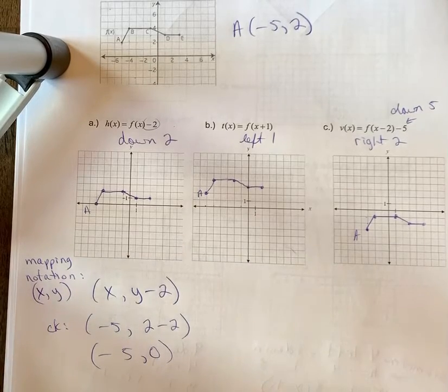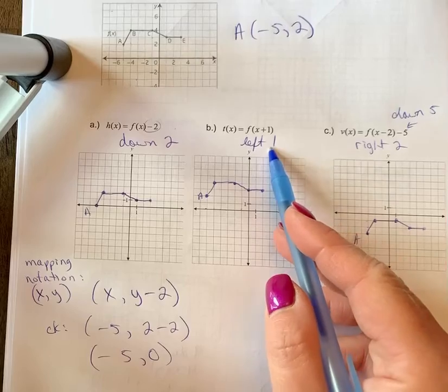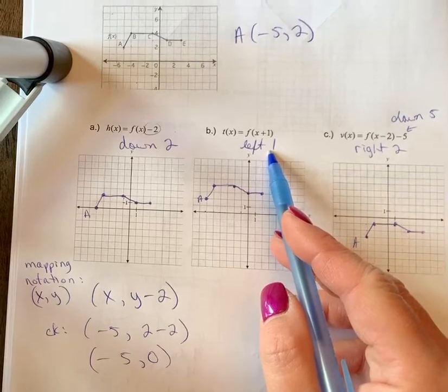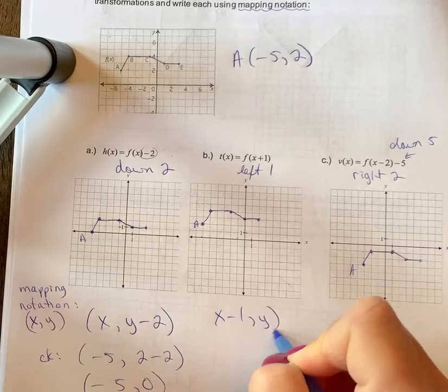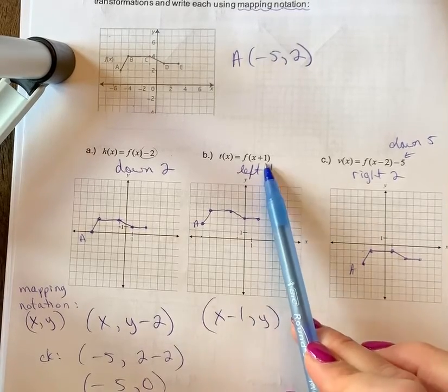If we look at B for the mapping notation, left 1 would affect the x coordinate. Left 1 means you subtracted 1. The mapping notation can be a bit deceiving as in the equation it's a plus 1, but in the mapping notation for the horizontal shift it's a minus 1.